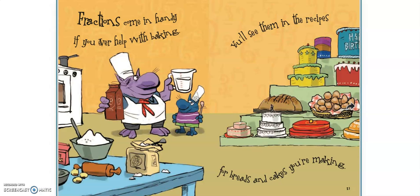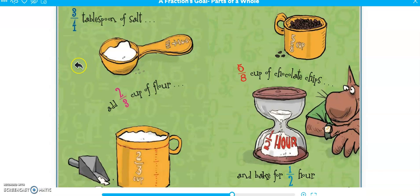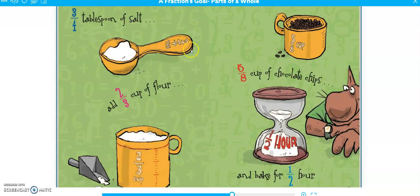Fractions come in handy if you ever help with baking — you'll see them in the recipes for breads and cakes you're making. Three quarters, or three fourths, tablespoon of salt. They're usually written on the little spoons and stuff when we're cooking too. You could ask mom or dad if you could look at some of those in the kitchen — they're really good reminders of how those would look.